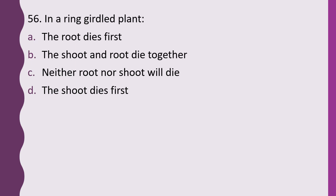Question 56. In a ring-girdled plant: the root dies first; the shoot and the root die together; neither shoot nor root dies; or the shoot dies first. The correct answer is option A, the root dies first — because the nutrients synthesized in the leaves are not able to reach the root.